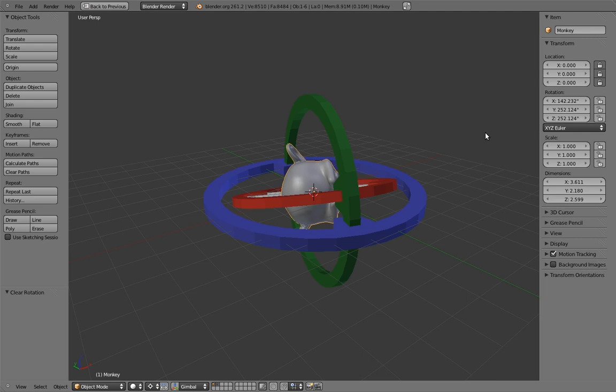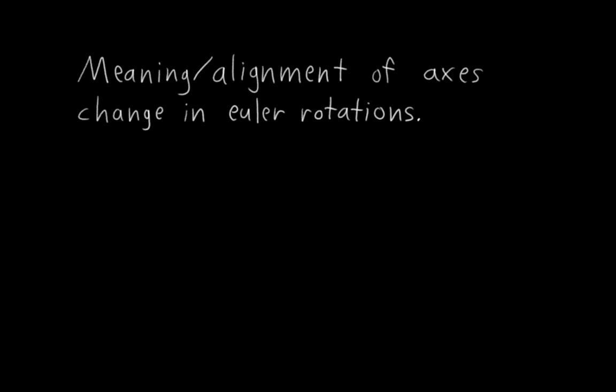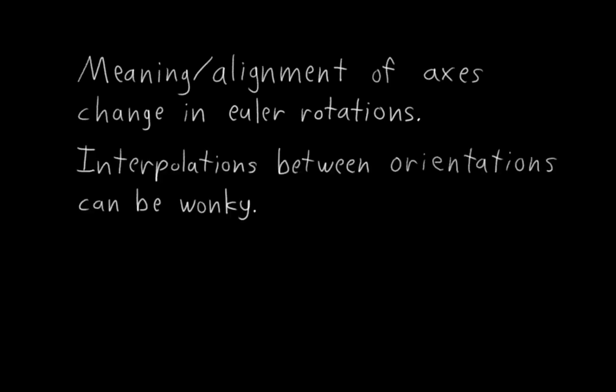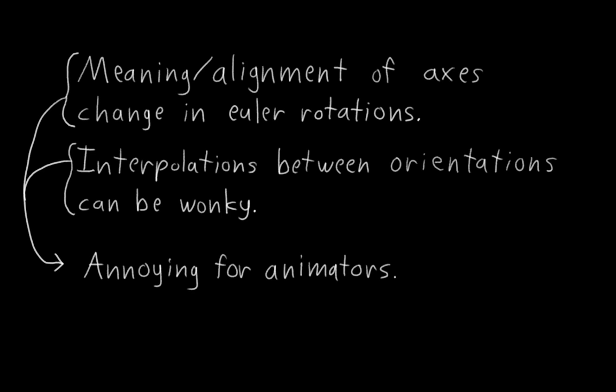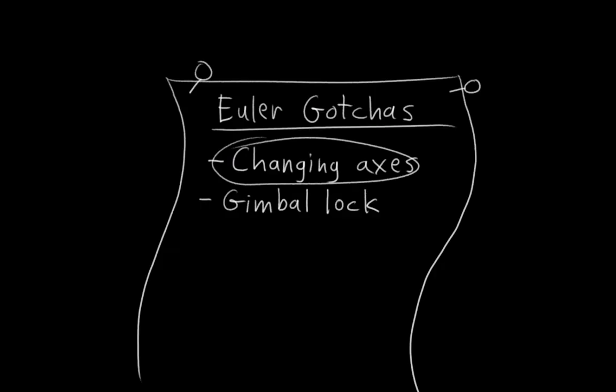However, note that it is aligned with the object's local x-axis, and I'll come back to this later, but just notice it for now. Anyway, the point of all this is that the meaning, or alignment of the axes, change in Euler rotations, so it's not as straightforward as a lot of people think. And these changing axes also mean that interpolation between different orientations can be kind of wonky sometimes, which can be annoying for animators to deal with. So that's the first gotcha.